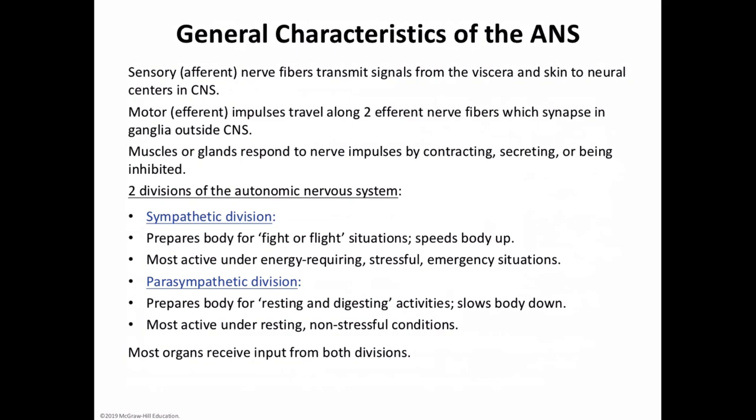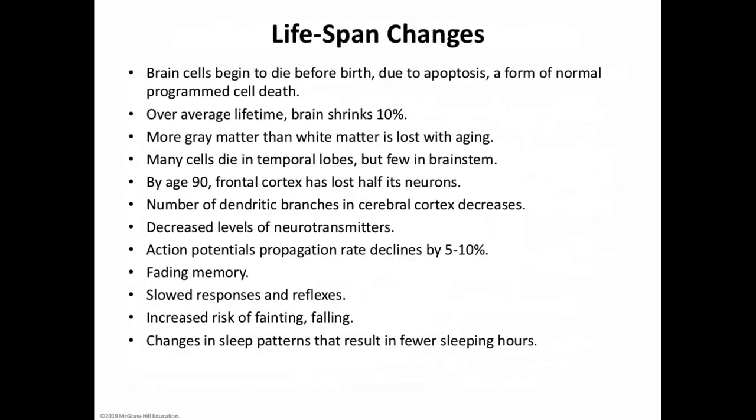Control of the autonomic nervous system rests mainly in the hypothalamus. Hypothalamic activity is important in those reflex centers involving the medulla oblongata and the spinal cord. Regarding lifespan changes: the redundancies and overlap of functions in our nervous system ensure that we can perceive and interact with the environment for many decades. In a sense, aging of this organ system begins before birth, because apoptosis — programmed cell death — carves out the structures that will remain in the brain.